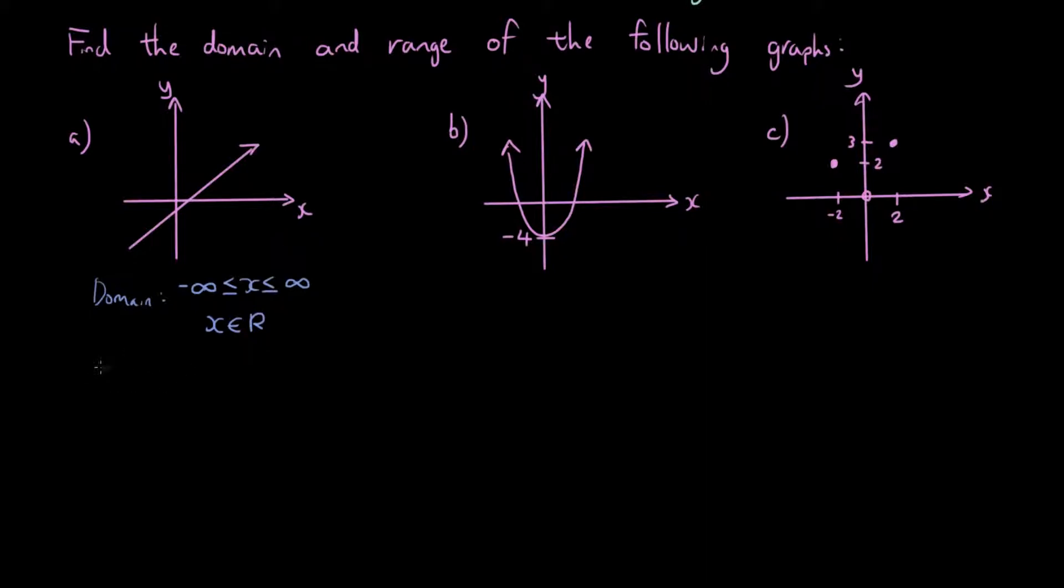Then we have a range, which is again from negative infinity all the way to positive infinity. y can be anywhere from negative infinity to positive infinity. Or you can say y is an element of real numbers, the set of real numbers, any number you can think of.